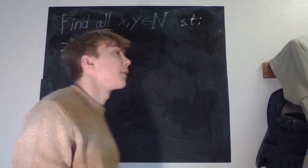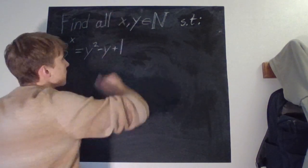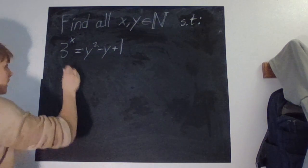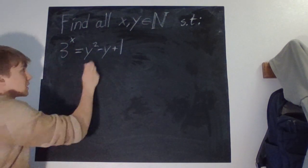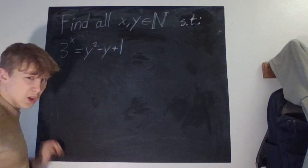Sup fuckers, here's a problem for you. Find all pairs of x and y positive integers such that 3 to the power of x is equal to y squared minus y plus 1.